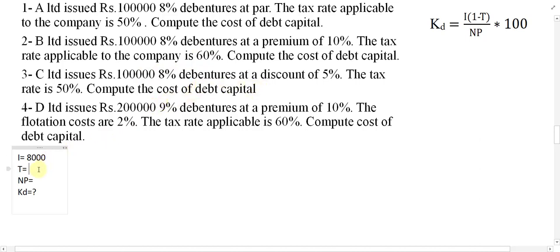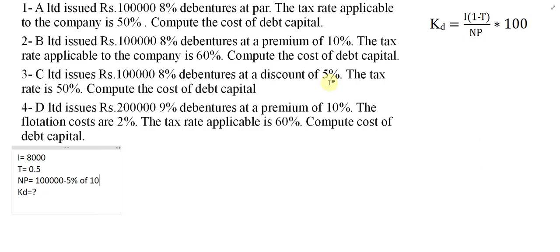Tax is equal to 0.5 because it is 50 percentage. Now we find out NP. The amount of loan was equal to 1 lakh, but this time the company issued at a discount of 5 percentage. So NP is 1 lakh minus 5 percentage of 1 lakh, which equals 1 lakh minus 5,000, giving us 95,000.